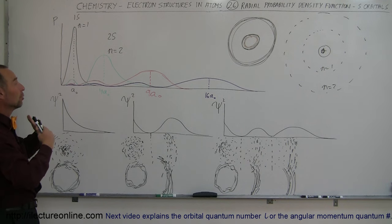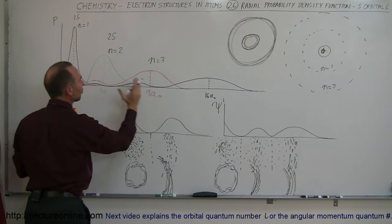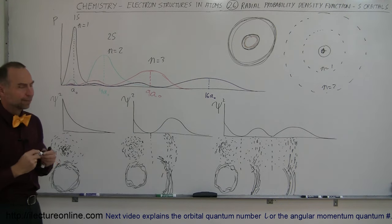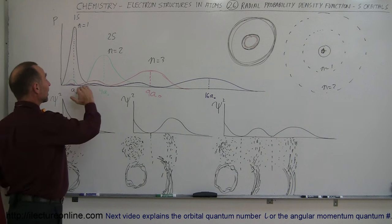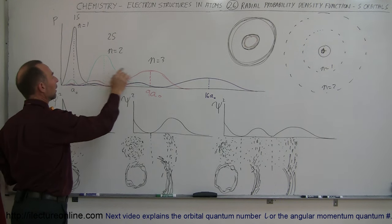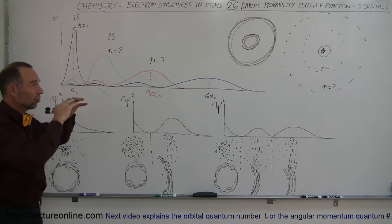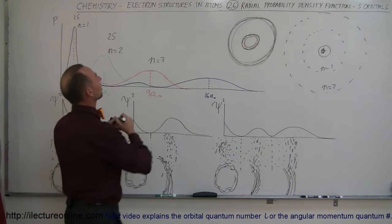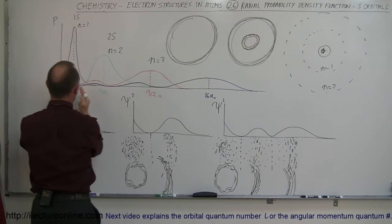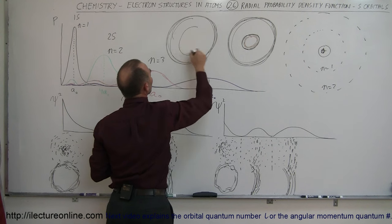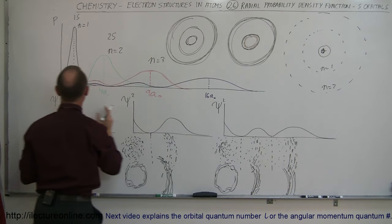When the electron moves to the n=3 energy state, that radius is much greater — now 9 times the original radius of the hydrogen atom. Just like before, there are actually two additional probability humps where the electron can also exist. For the third energy level, the S orbital isn't just a single spherical shape — it actually exists in a three-part structure. The main location is at 9 times the Bohr radius, but there's another region around 3 to 4 times the Bohr radius, and yet another closer in.